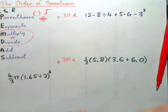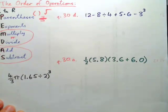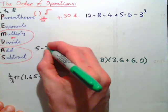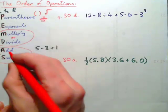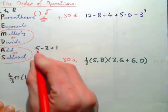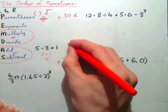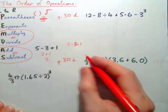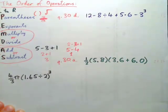And add or subtract is the fourth thing, and you go from left to right. For a quick example, if we had 5 minus 3 plus 1, we should add or subtract from left to right. So 5 minus 3 gives 2, and 2 plus 1 gives 3 — the answer is 3. Incorrectly, you might add the 3 and 1 to get 4, then 5 minus 4 is 1 — that would be wrong.